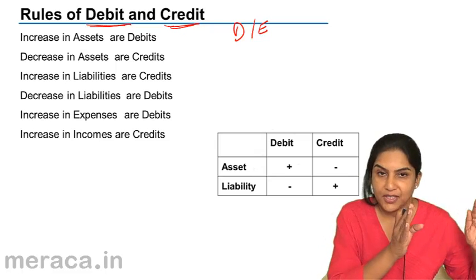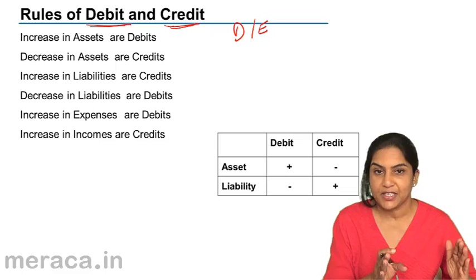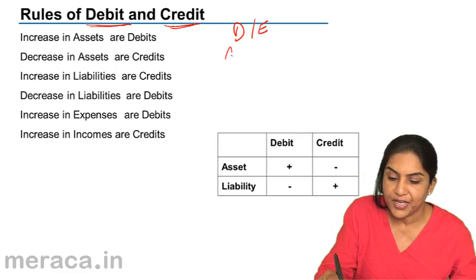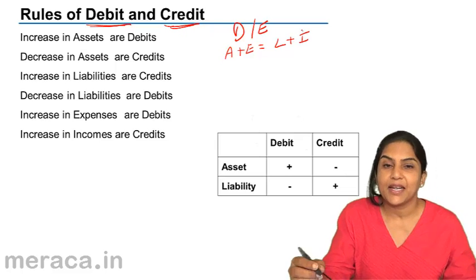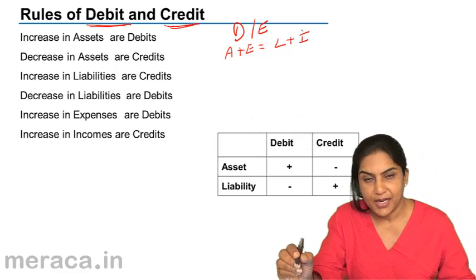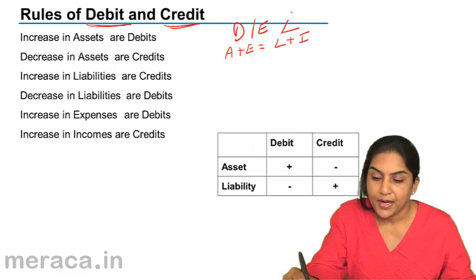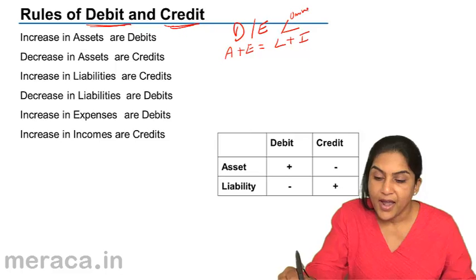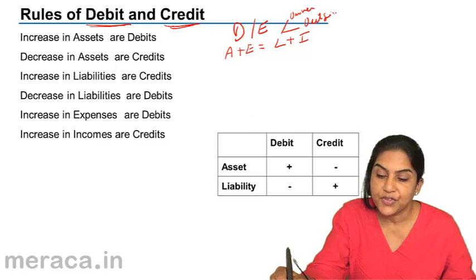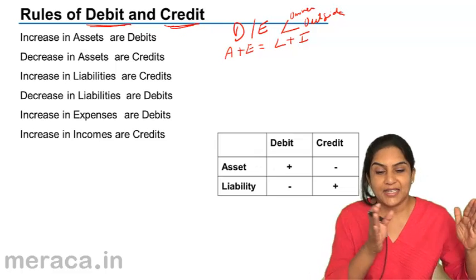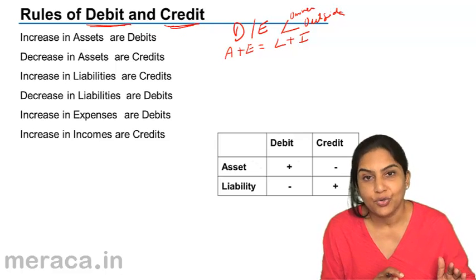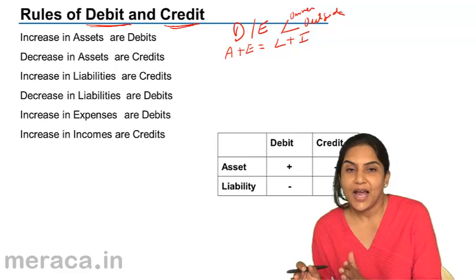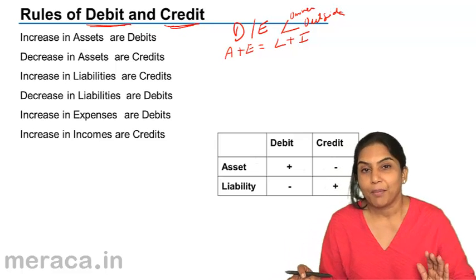We have decided to call the left hand side the debit side: assets and expenses. Asset plus expenses equals liabilities plus income. Liability here includes liability to the owner and liability to outsiders, i.e., capital. The same rule that applies to assets will apply to expenses, and the same rule that applies to liabilities will apply to income.